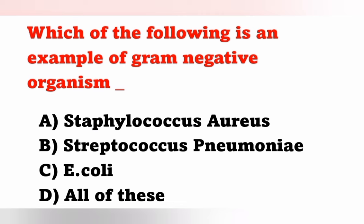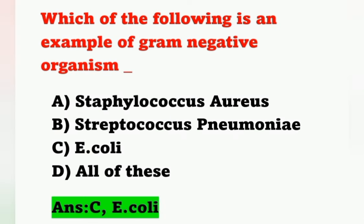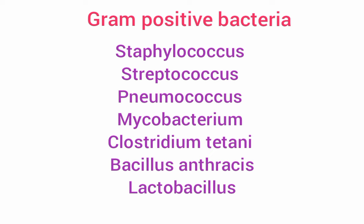The next question: which of the following is an example of a gram-negative organism? Options: Option A, Staphylococcus aureus; Option B, Streptococcus pneumoniae; Option C, E. coli; Option D, all of these. Gram-positive bacteria include Staphylococcus, Streptococcus, Pneumococcus, Mycobacterium, Clostridium tetani, Bacillus anthracis, and Lactobacillus.